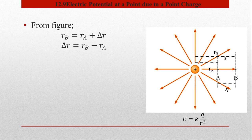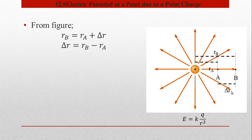R_B کی value نکال سکتے ہیں — R_B کو R_A plus delta R کے طور پر لکھا جا سکتا ہے، جو figure سے صاف دیکھا جا سکتا ہے۔ اس طرح delta R کی value R_A اور R_B کی terms میں یہ ہوگی: اگر R_B میں سے R_A کو minus کریں تو جو part رہے گا وہ delta R کے equal ہوگا۔ لہٰذا یہ expression یہاں لکھ دیا گیا ہے۔